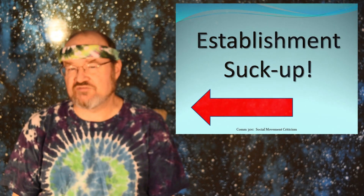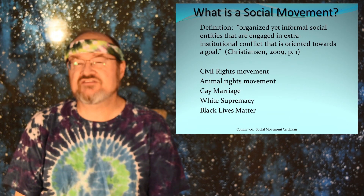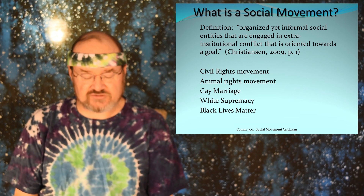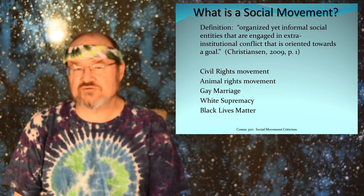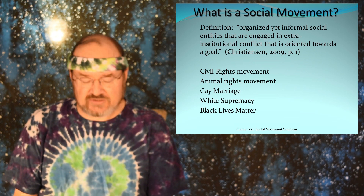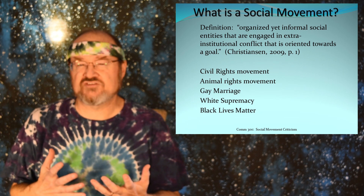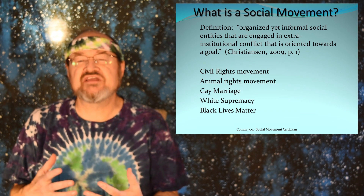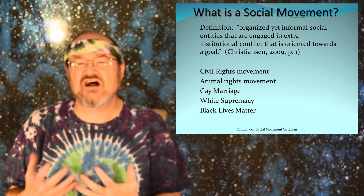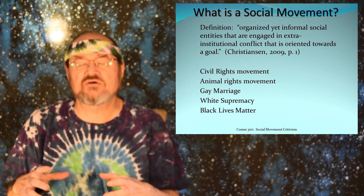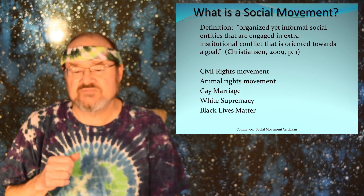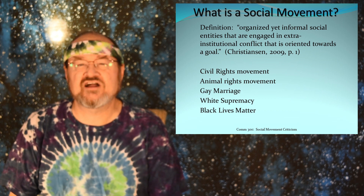How do we define social movement and what are some examples? The Christiansen reading says that it's an organized yet informal social entity that is engaged in extra-institutional conflict oriented towards a goal. That's pretty general, but it includes informal kinds of associations — not governmental, for example. And it's extra-institutional conflict, which means that it is coming into conflict with some of the aspects of our current institutional structure, whether it might be civil rights or gay marriage or some other kind of movement.